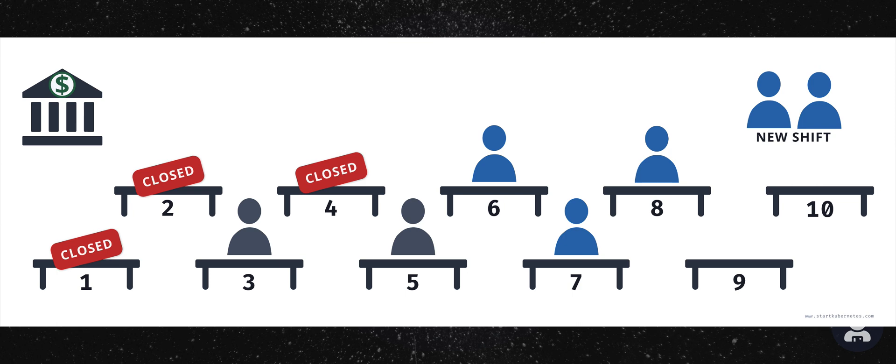This is how the rolling update strategy works. In the rolling update strategy, you can define max unavailable and max surge numbers to specify the maximum number of pods that can be unavailable at any time, and the maximum number of old and new pods that can be running at the same time.